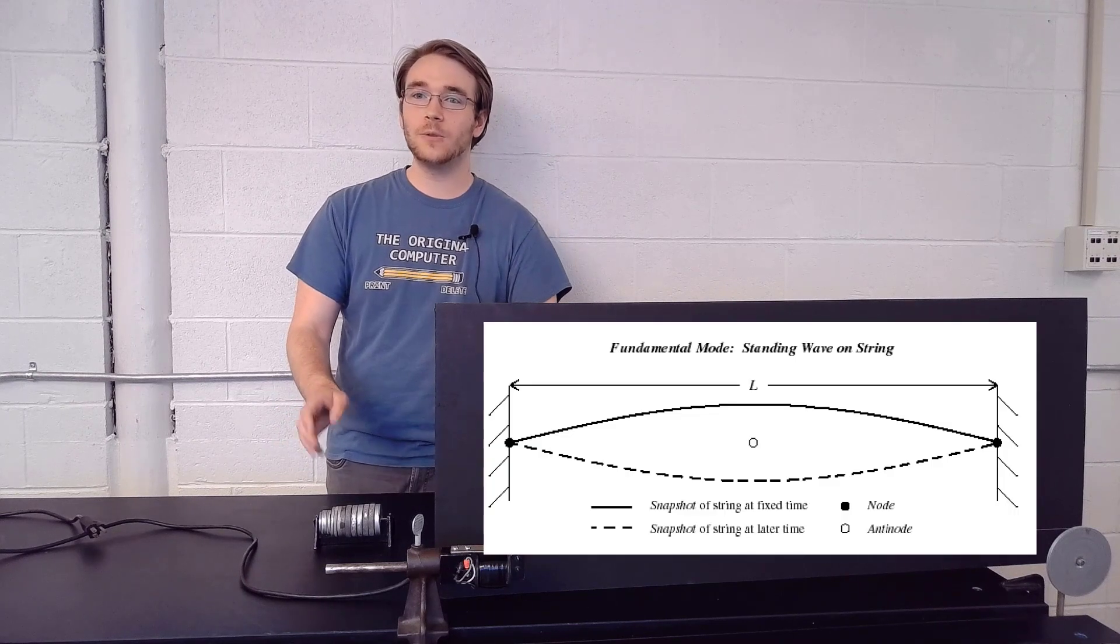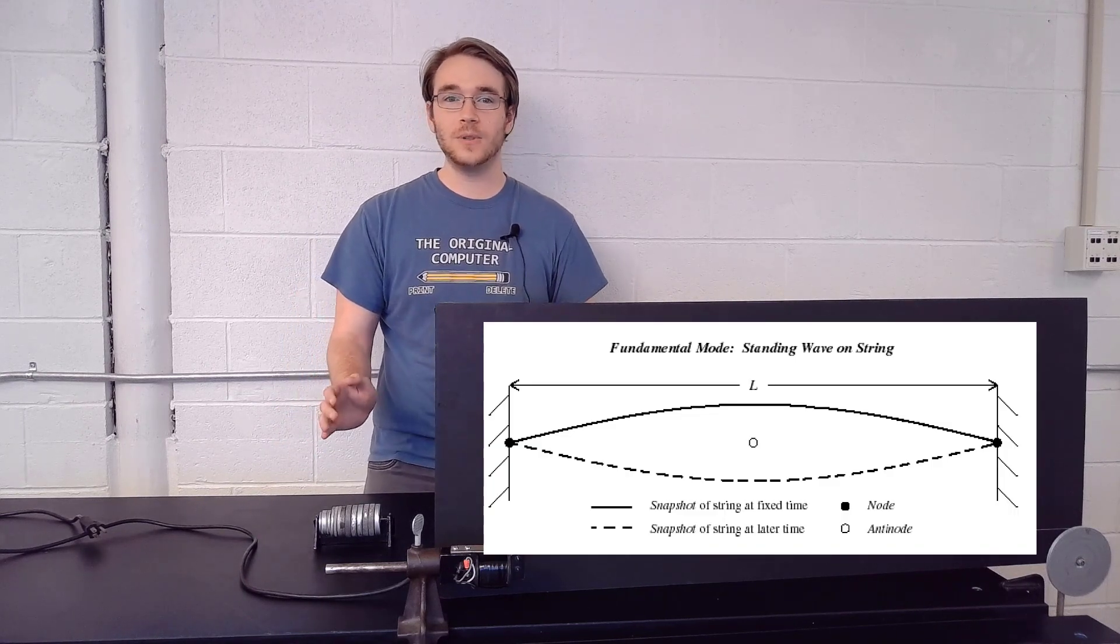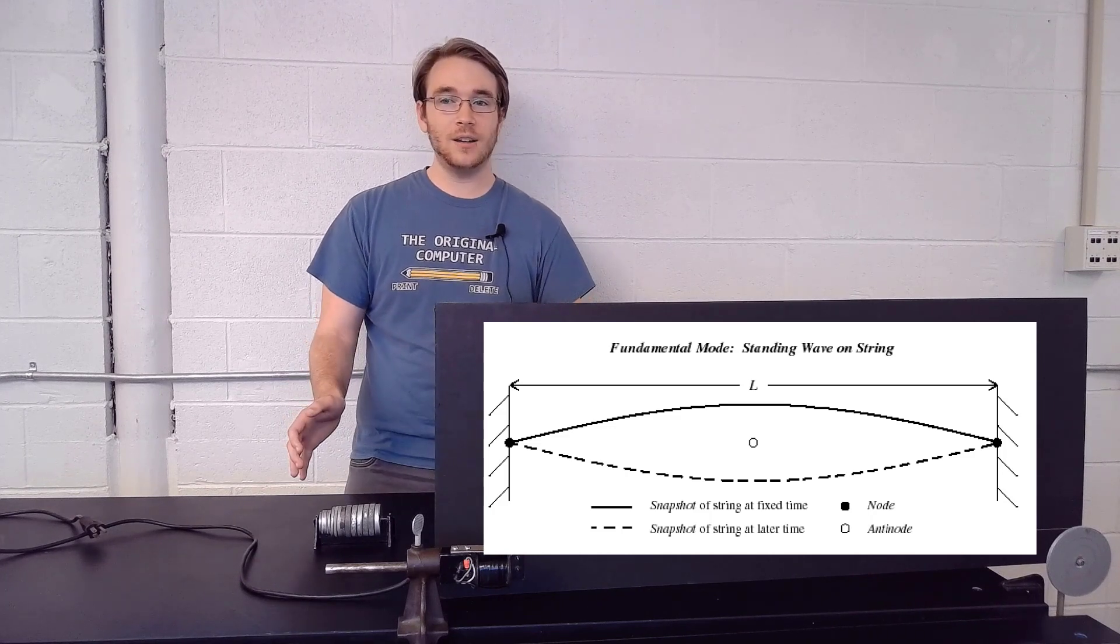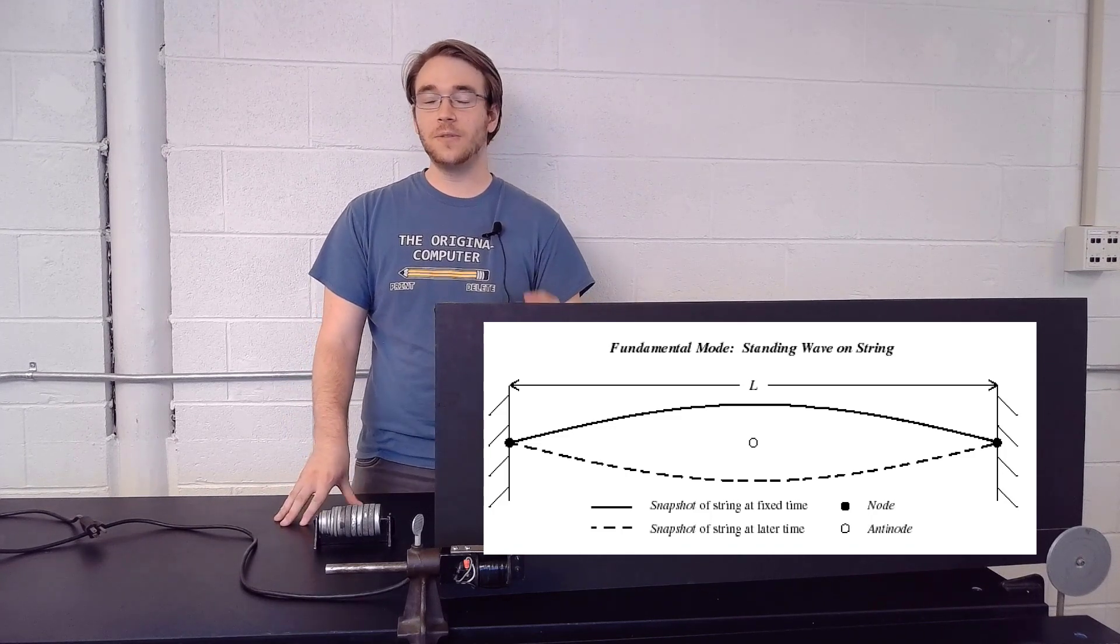When a string is fixed at both ends, it will vibrate naturally only at certain frequencies or certain modes. The value of these frequencies depends on l and v. The lowest of these frequencies is called the fundamental frequency.